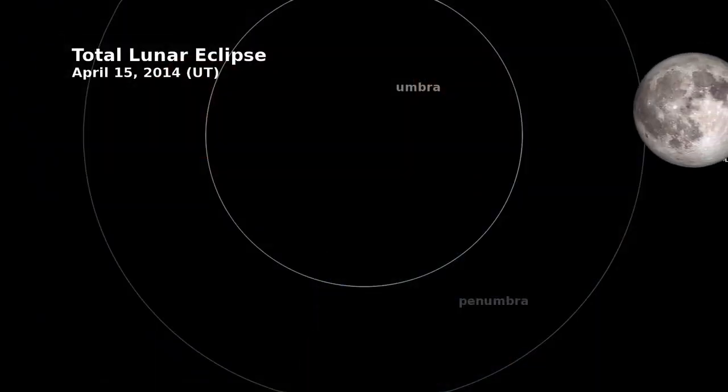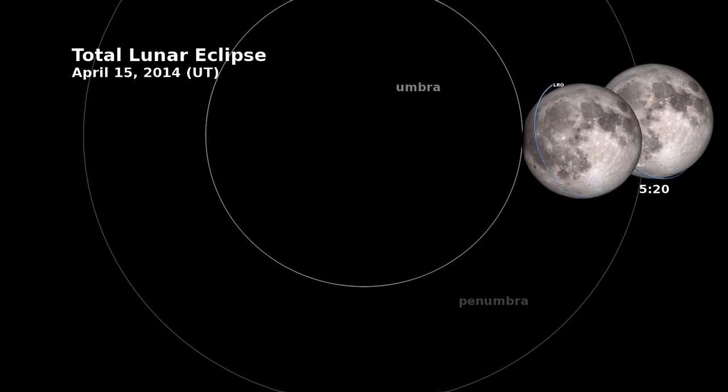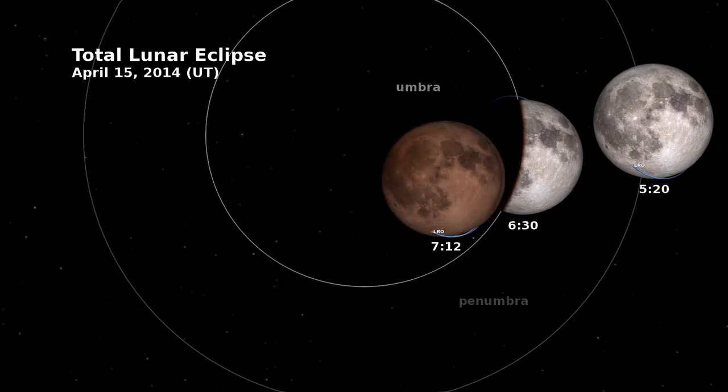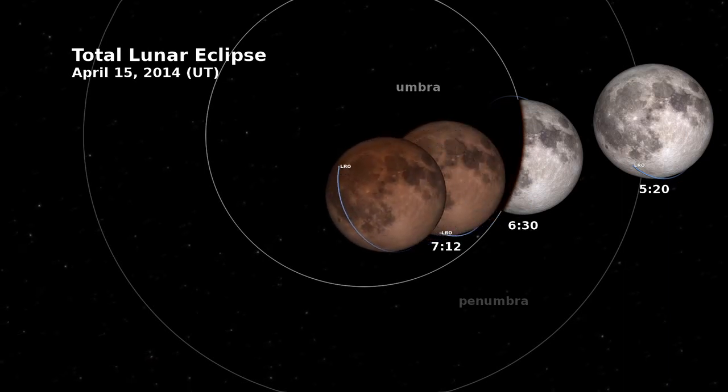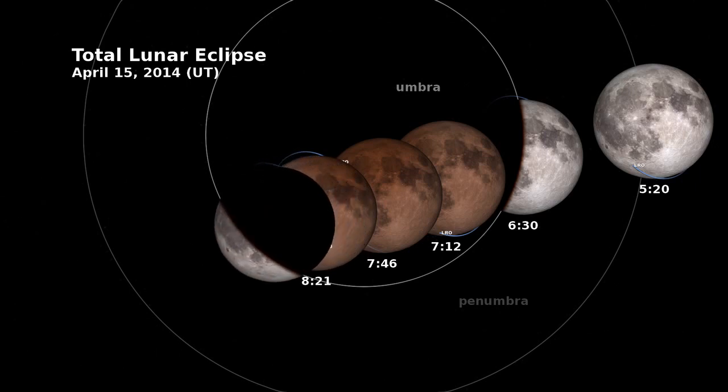What we see in this animation is a recreation of LRO orbiting the moon during the upcoming eclipse. When the moon passes into the Earth's umbra, or the Earth's shadow, that's when it is completely blocked from the sun, and we see the effect of Earth's sunsets being projected onto the lunar surface. That's why it turns a hue of red.